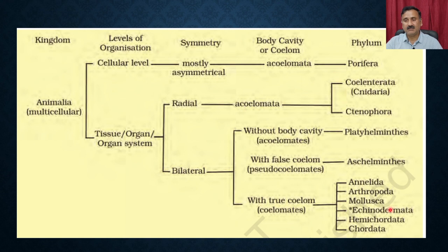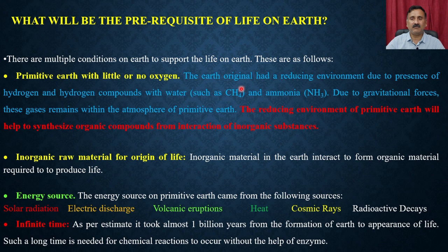Remember, this is a summary of what we discussed in the previous module, so we are not going to discuss in detail all the properties of these phyla. Chordata is at the bottom and represents the most well-defined and well-developed organisms. After this, we also discussed how organisms evolved or originated on earth. What is the prerequisite of life on earth? Earth is the only planet on which life exists.